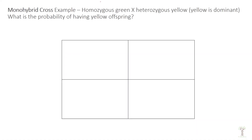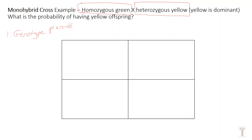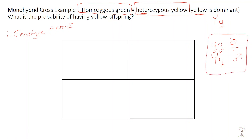Let's look at an example. We are going to cross a homozygous green parent plant with a heterozygous yellow plant. Step one: figure out the genotype of the parents. Yellow is dominant so we use capital Y for yellow and small y for green. The homozygous green parent's genotype is yy — that's the mom. The dad plant is heterozygous and yellow, so heterozygous means the alleles are different: capital Y and small y. Step two: figure out the gametes of the parents.